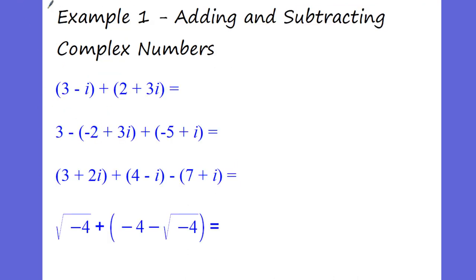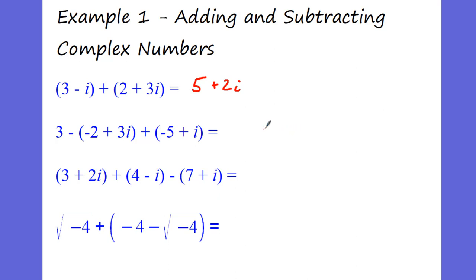Let's do some adding and subtracting of our complex numbers. We're going to add all of our real numbers. So you can see in the first one, we have 3 plus 2, that's 5. We have negative 1i plus 3i, that ends up becoming 2i, and that's in standard form.